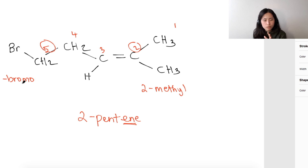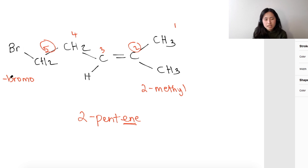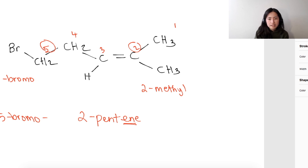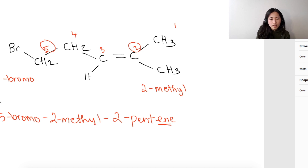In terms of naming, you're probably wondering which goes first — 5-bromo or 2-methyl. Both go in front of 2-pentene. In terms of priority, because this is based on alphabetical order, bromo comes before methyl. That's why you have 5-bromo in front, then 2-methyl-2-pentene. So the full name is 5-bromo-2-methyl-2-pentene.